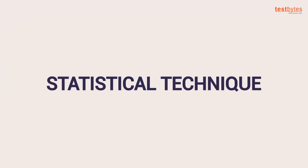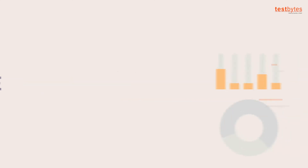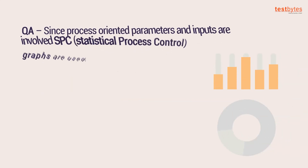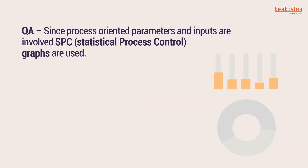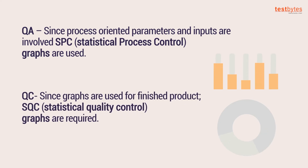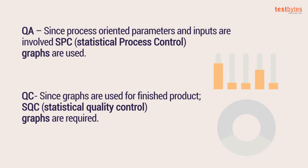Regarding statistical techniques, QA is process-oriented, so parameters and inputs are involved and SPC — statistical process control — graphs are used. For QC, since the focus is on the finished product, SQC — statistical quality control — graphs are required.